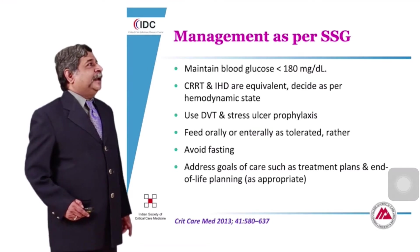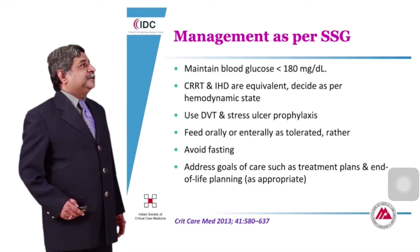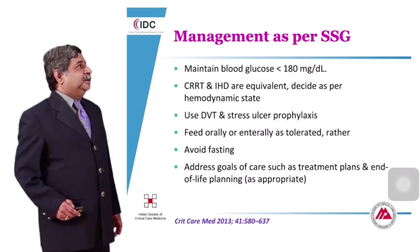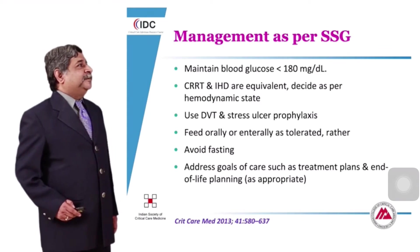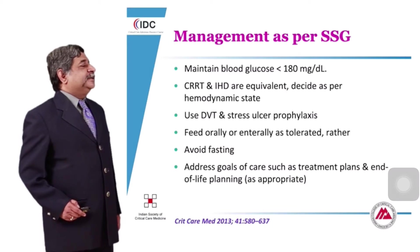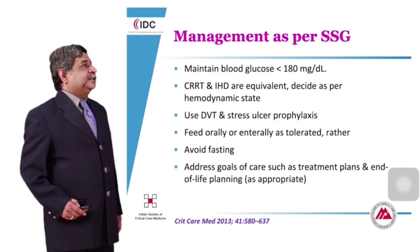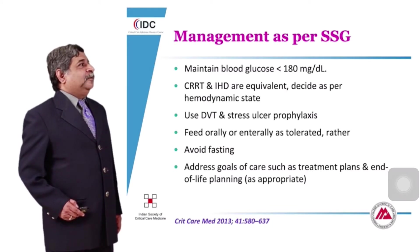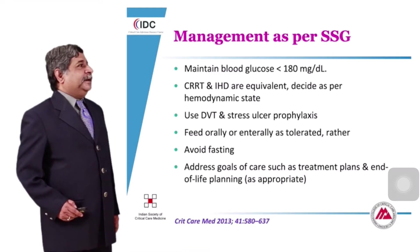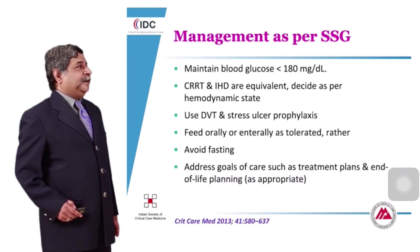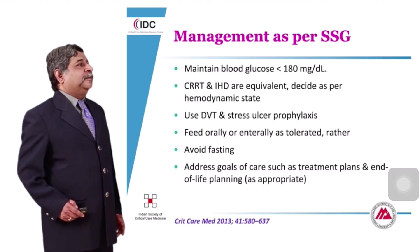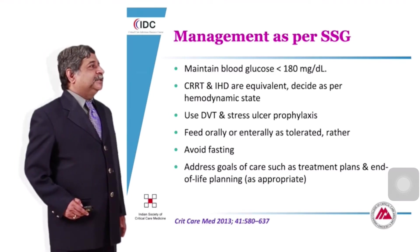Decide between continuous renal replacement therapy and intermittent hemodialysis based on hemodynamic state — if the patient is hemodynamically unstable, use continuous renal replacement therapy, otherwise intermittent hemodialysis can be used. Use DVT and stress ulcer prophylaxis. Feed orally or enterally as tolerated. Avoid fasting rather than starting TPN very early. Address goals of care including treatment plans and end-of-life planning as appropriate.